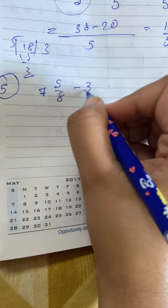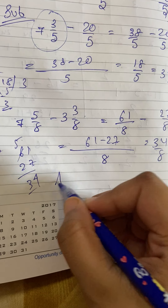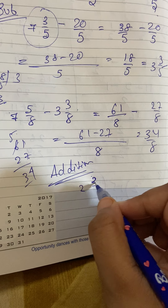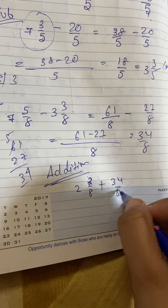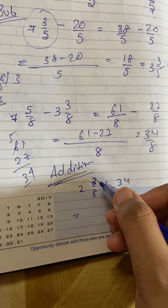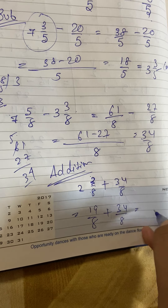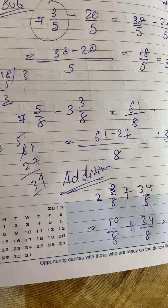7 into 8 is 56, plus 5 is 61 by 8. Minus 3 into 8 is 24, plus 3 is 27 by 8. Take 8 as common denominator. 61 minus 27 gives 34 by 8. Don't simplify yet — the addition part is still remaining. Add 2 and 3 by 8: 2 into 8 is 16, plus 3 is 19 by 8. Then add: if the answer is improper, convert it to mixed.